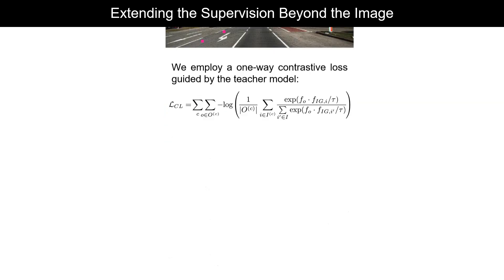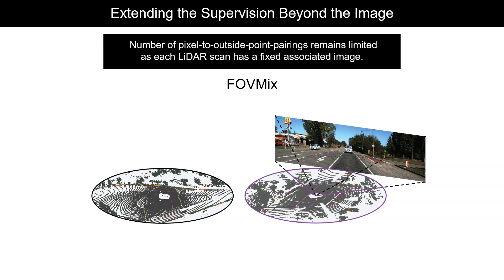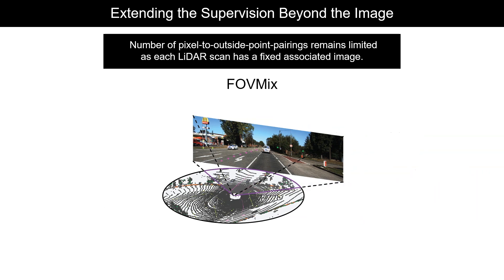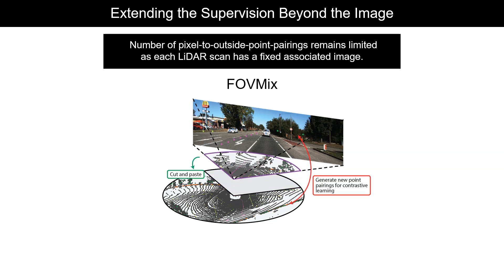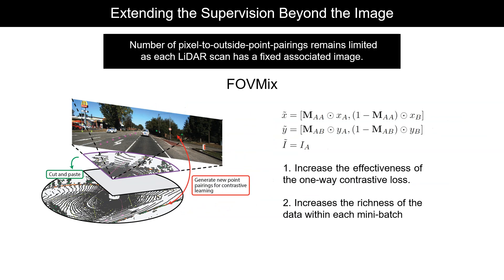We observe that the number of pixel-to-outside-point pairings remains limited, as each LiDAR scan has a fixed associated image. To combat this, we introduce a simple mixing strategy called FOVMix, where we cut and paste an image with its corresponding points from one scene onto another. With FOVMix, we are not only able to generate new pixel-point pairings to aid the contrastive learning, but also increase the variability within each mini-batch.